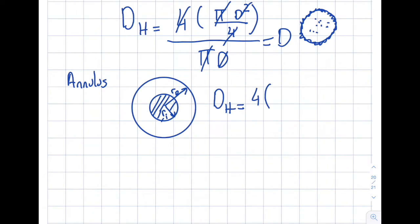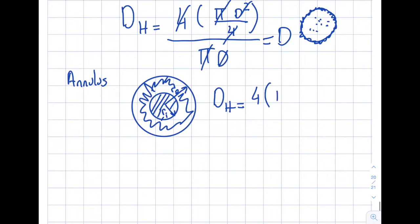Right, that will be π(r_o² - r_i²). How about the wetted perimeter? It will be this plus this, because those two surfaces are being wetted by the existence of the fluid, right? So let me add them up and see what happens. So that will be 2πr_o plus 2πr_i.